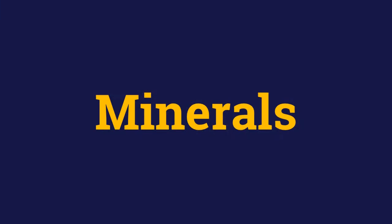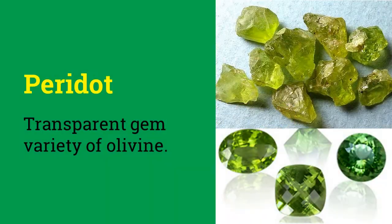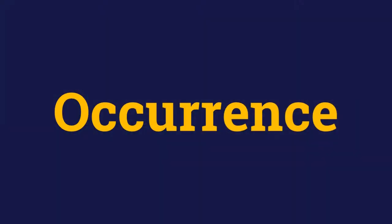We have already seen fayalite and forsterite, which are two minerals of the olivine family. Another important mineral is the transparent gem variety of olivine known as peridot.